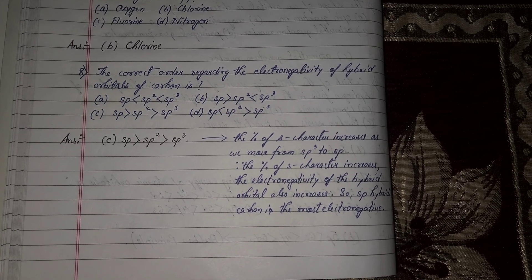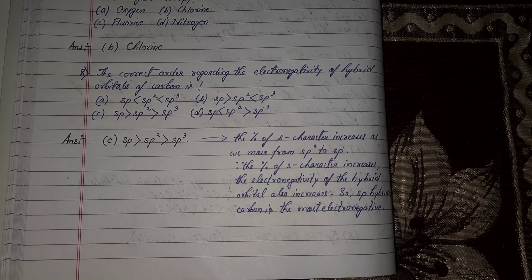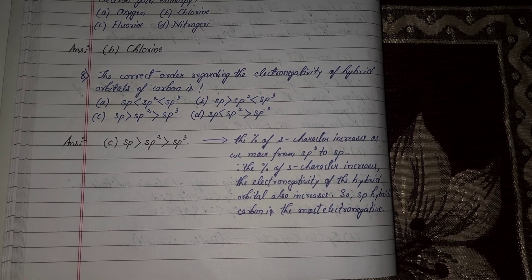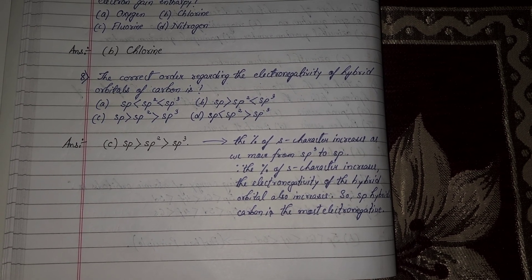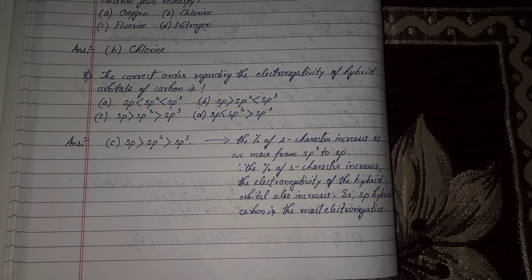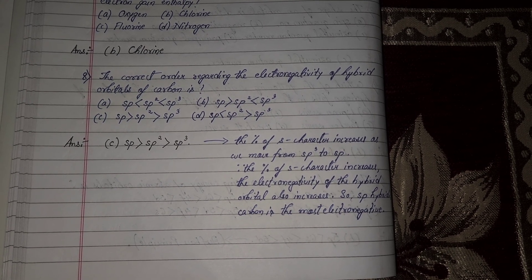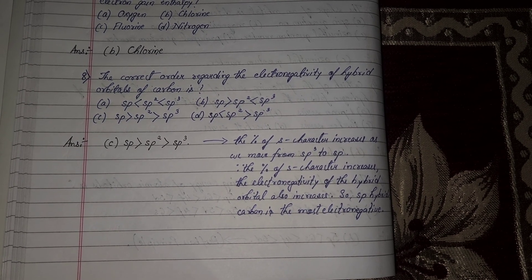Next question 8, the correct order regarding the electronegativity of hybrid orbitals of carbon is? Option number C, SP is greater than SP2 is greater than SP3 will be your correct answer.